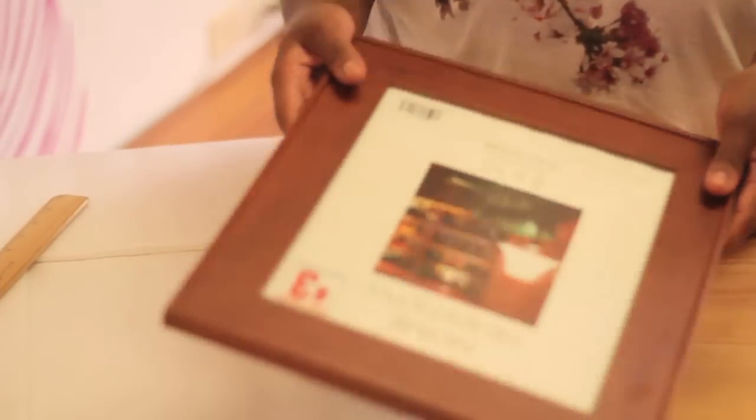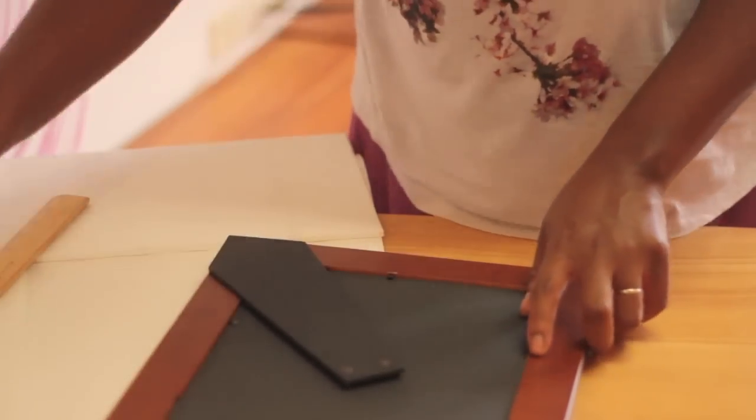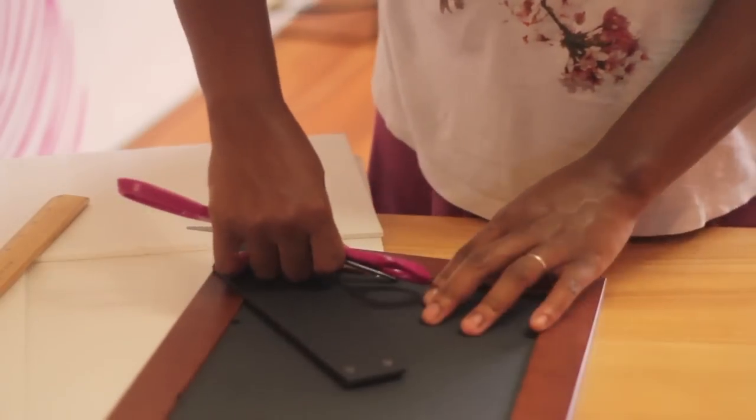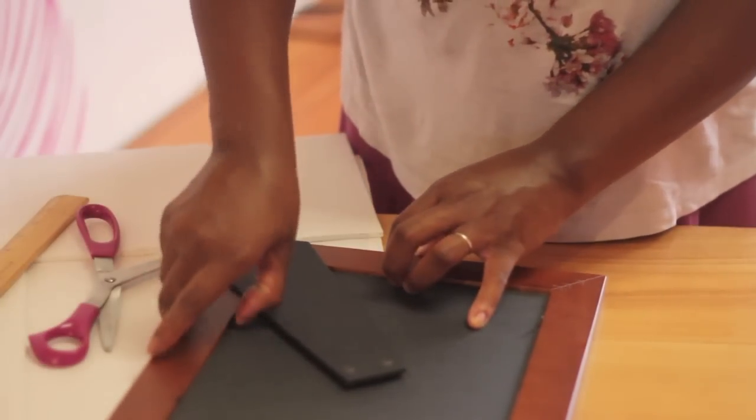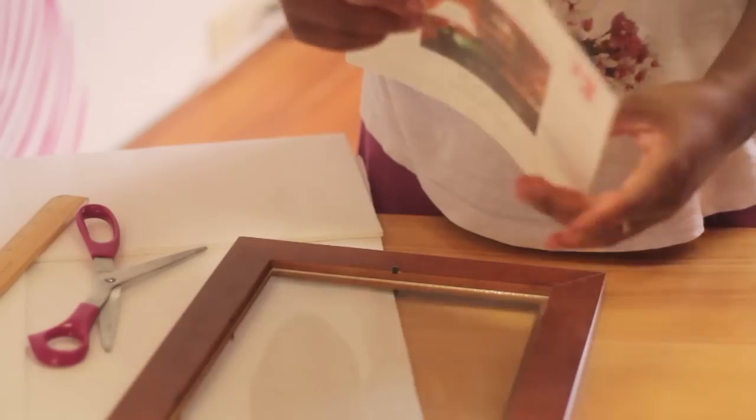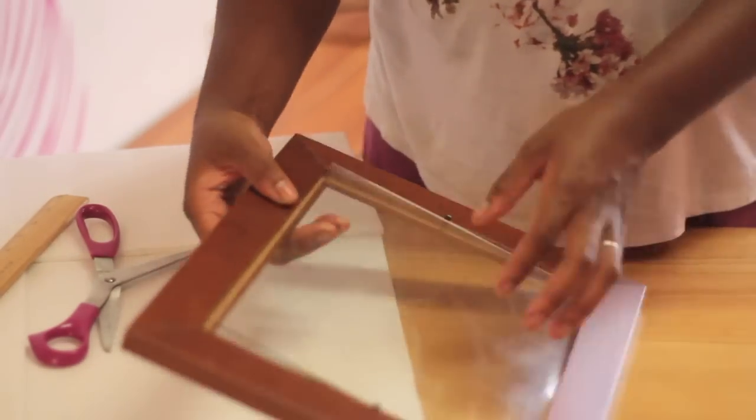Now your first step is going to be to take your frame and remove the glass. One thing you should know about the frame is that it's probably better to use a wooden frame over a plastic or porcelain frame. I say this because the wooden frames tend to have the really nice metal prongs as well as they tend to have the glass inset into the frame rather than sitting on top.